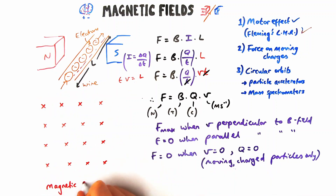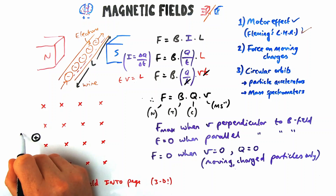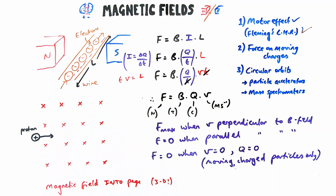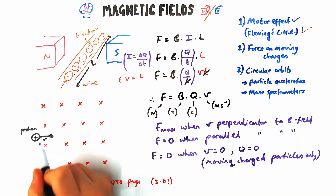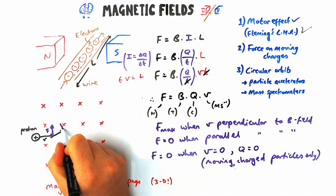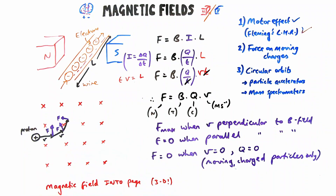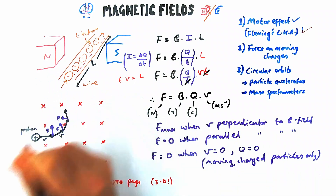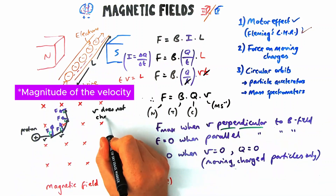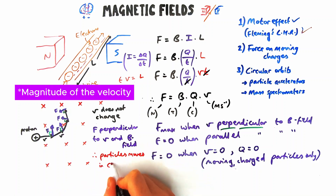We represent this with diagrams where crosses indicate the magnetic field pointing into the page. If a proton enters with initial velocity v, it experiences a force perpendicular to its velocity, which changes direction at each point, causing the proton to follow a circular path. Note that the speed doesn't change and the force is always perpendicular to both the velocity and the magnetic field — you have to think carefully in 3D for these examples.